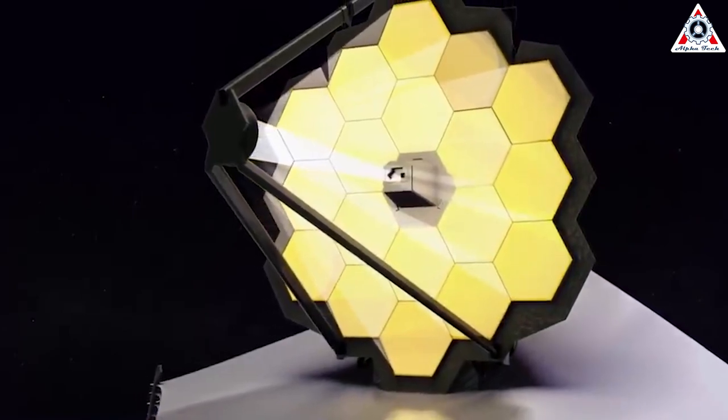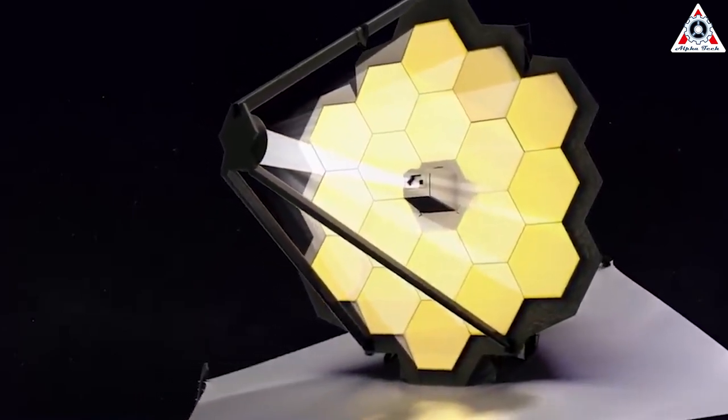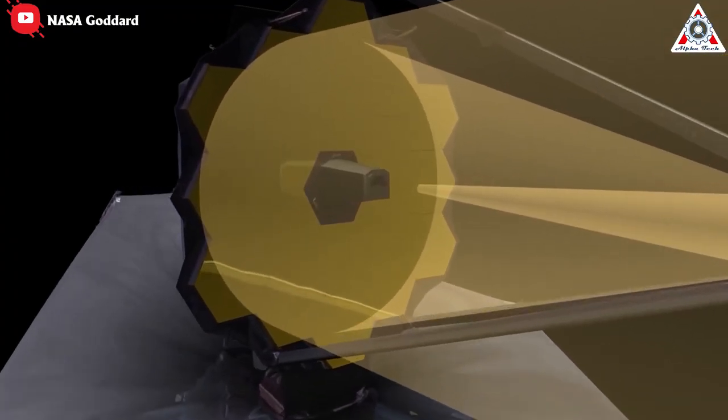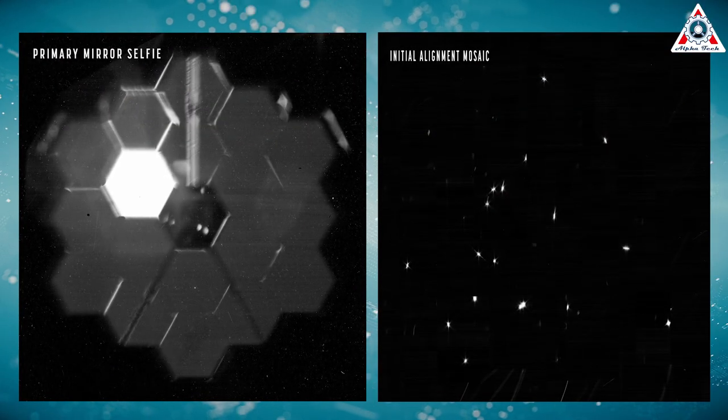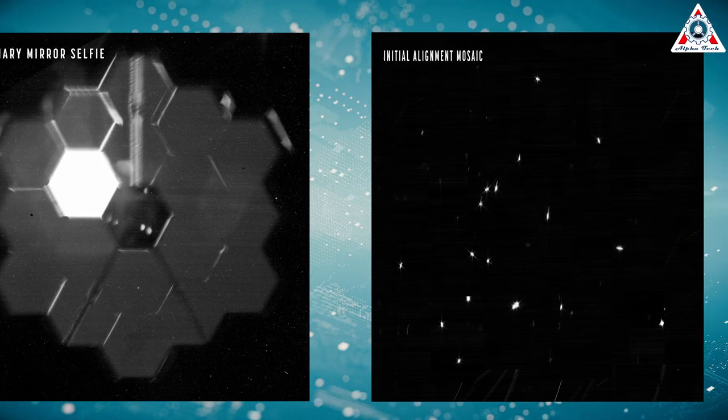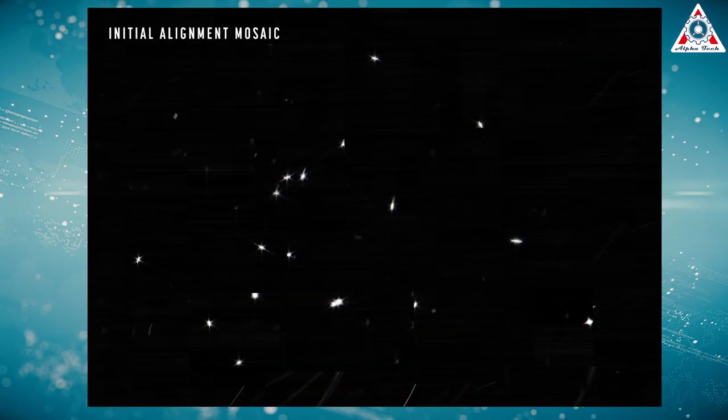To bring each segment into the right position to work together perfectly, the team needs to tweak their individual position by focusing them on the star HD 84406. Any final Webb image will essentially be a stitched together composite.